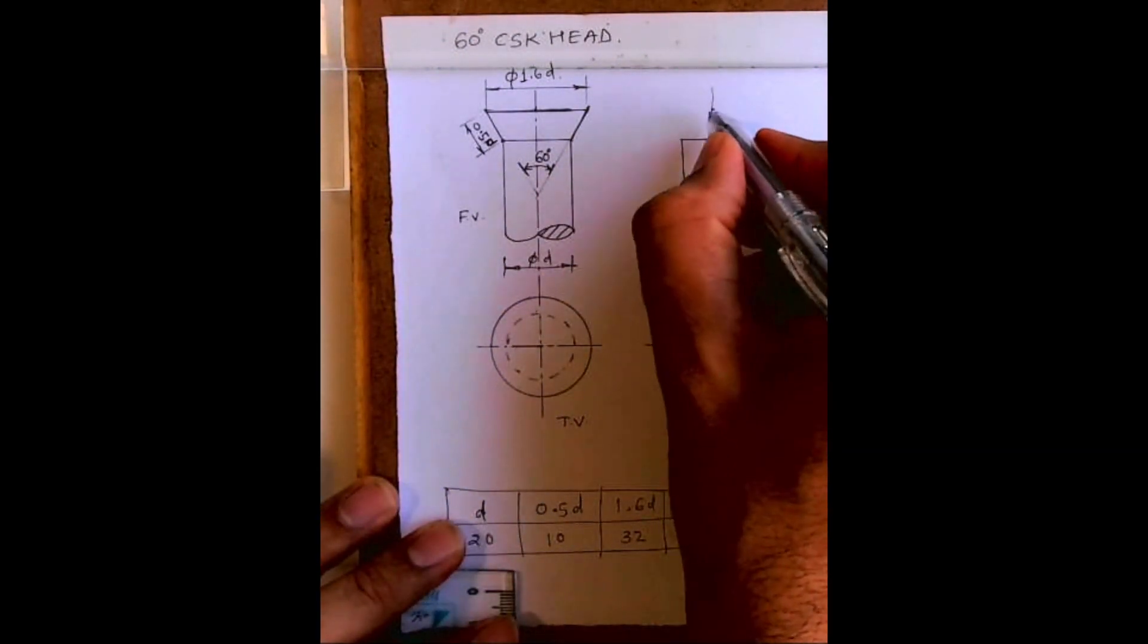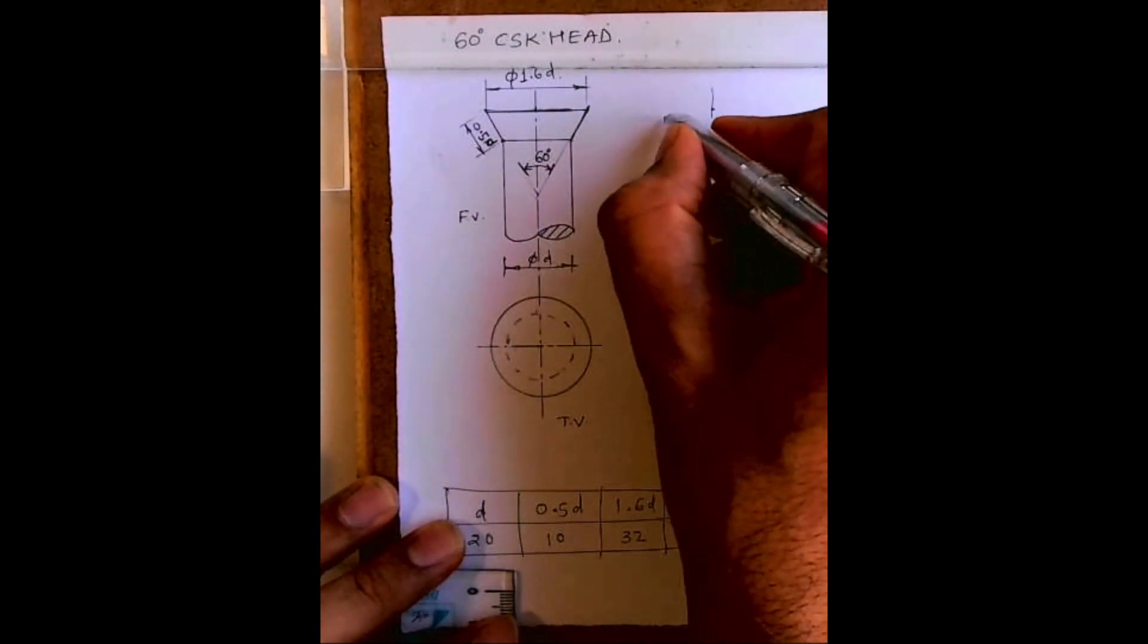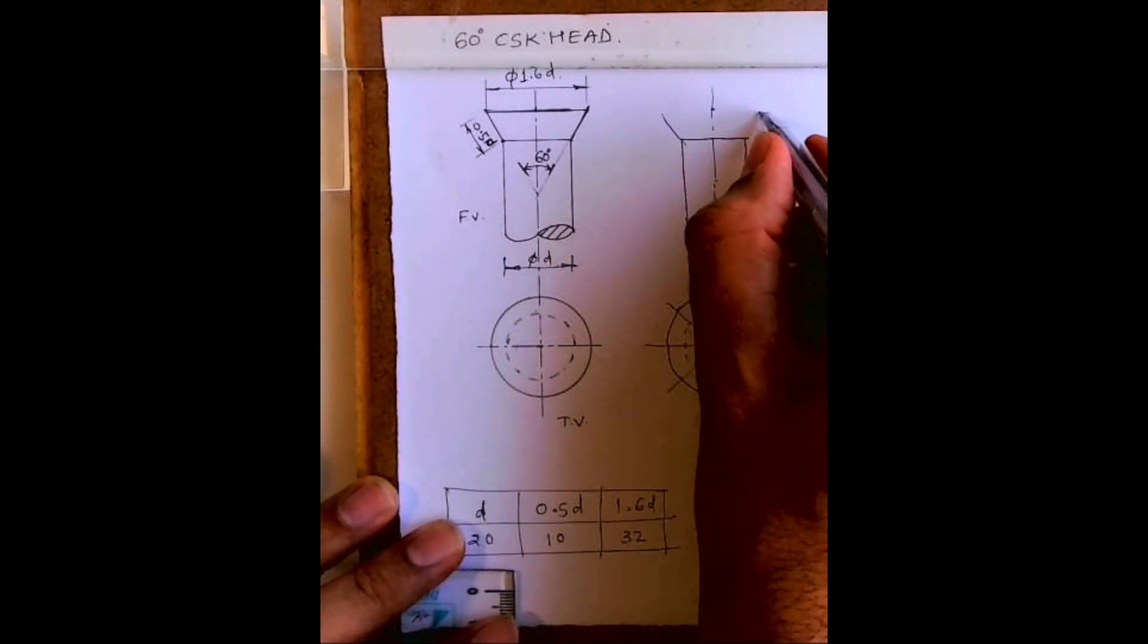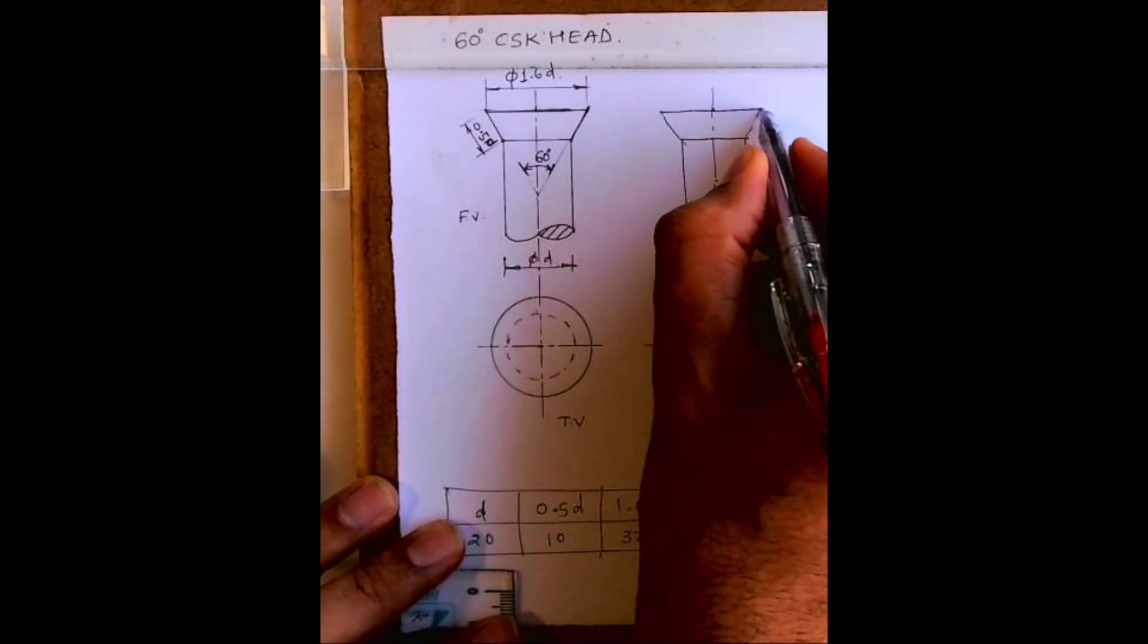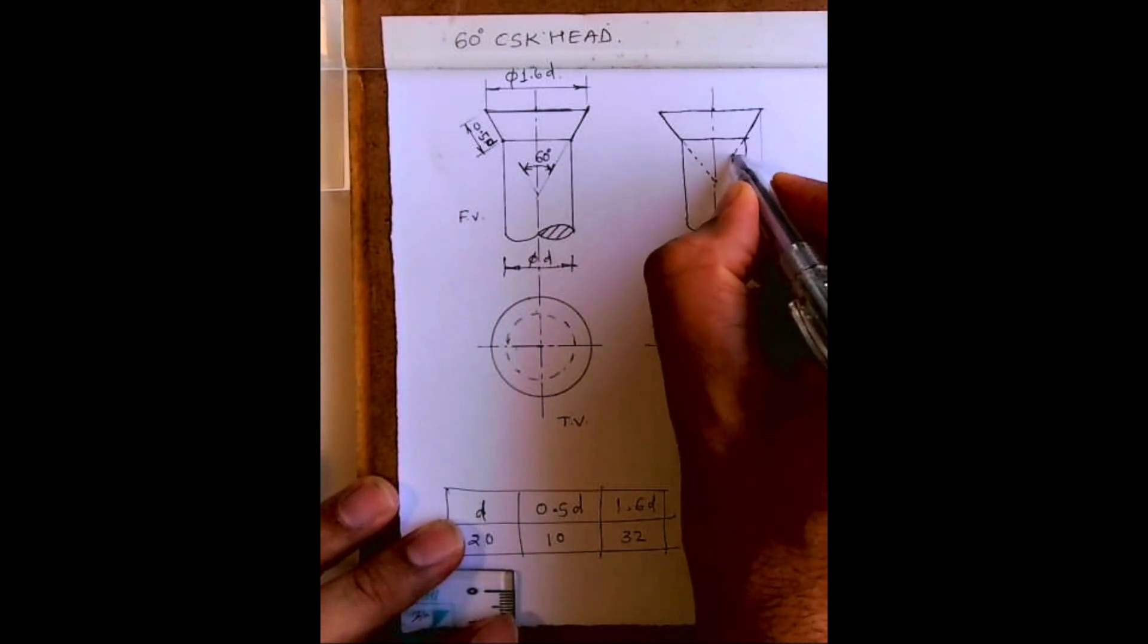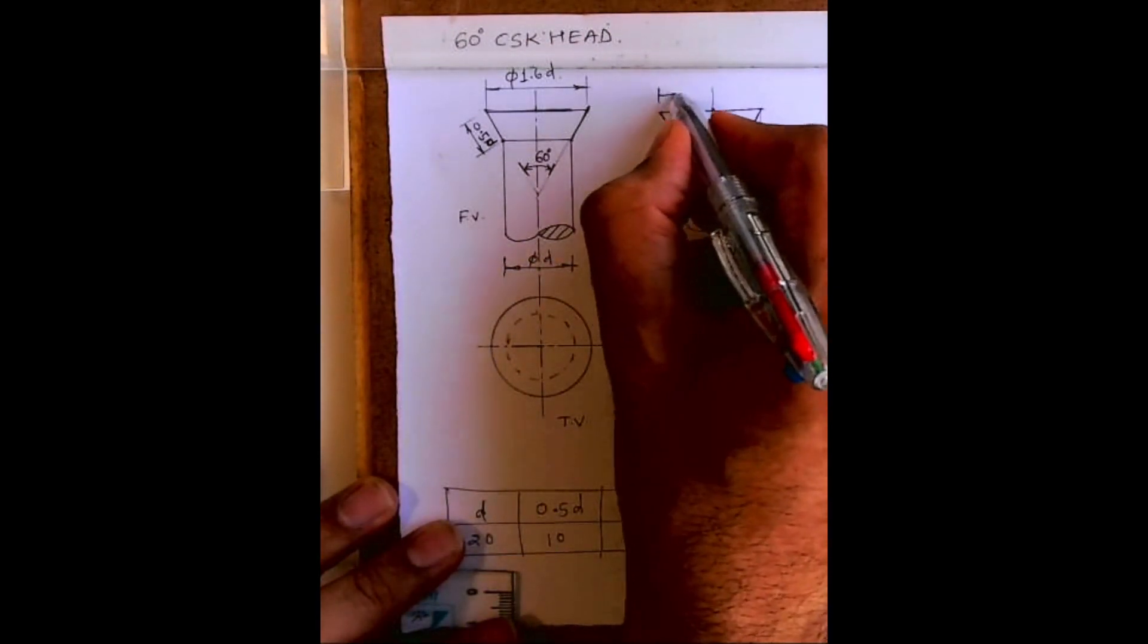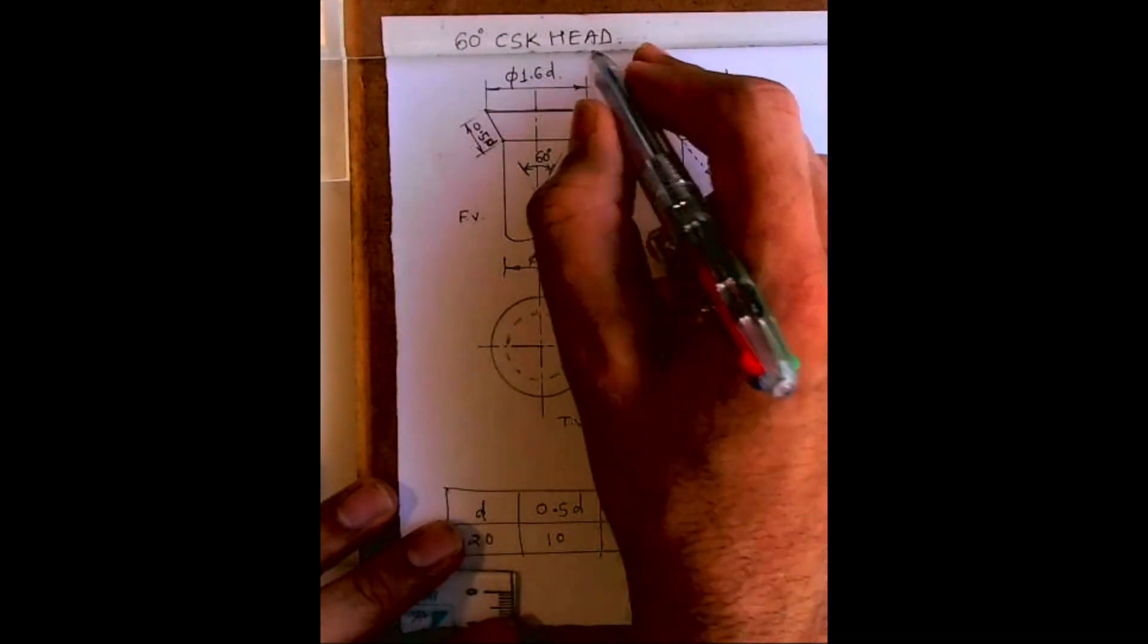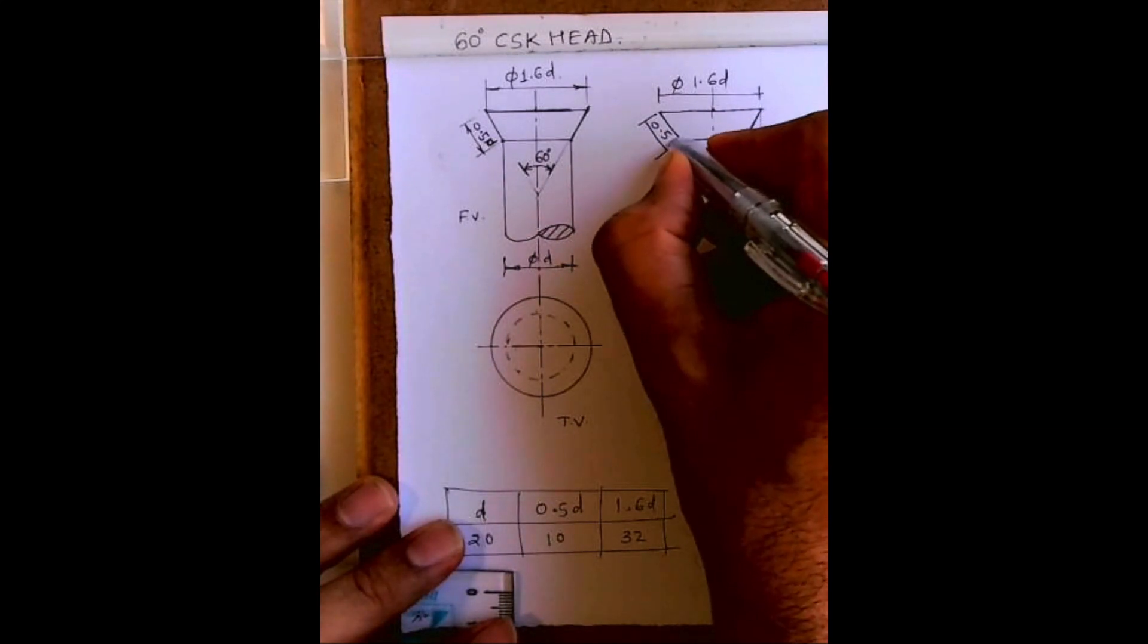This is horizontal. Here also we'll draw 1.6d, so approximately this much. See, from here I'll extend, and this should be 0.5d. We can do dimensioning like this.